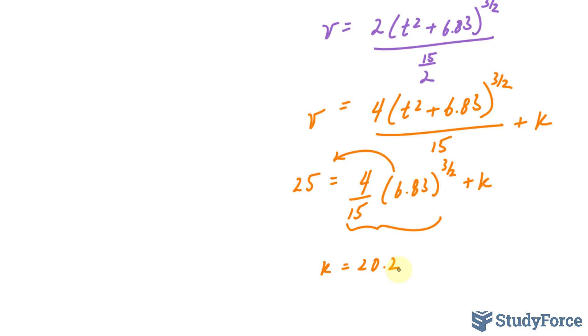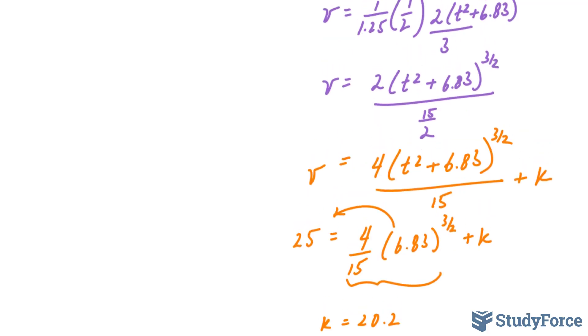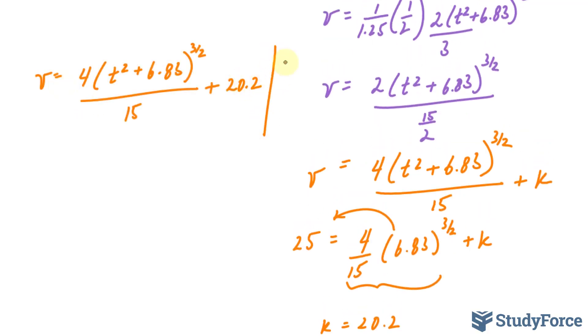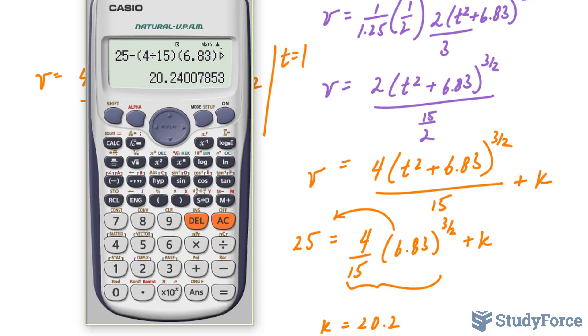Now all I have to do is substitute this k back into here and set t is equal to 1 second. Here's how to do that. Setting t is equal to 1 gives us, and I'll use my calculator, starting up here.